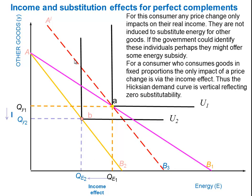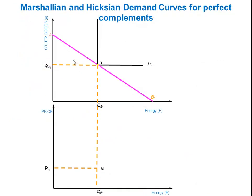Since the only impact is via the income effect, the Hicksian demand curve is vertical, reflecting zero substitutability. Let's look at how we would derive that. In the top diagram, we have the same situation as before: initial equilibrium at A, where Priyanka is maximizing her satisfaction on U1, given her income and relative prices of other goods and energy. She's at A, consuming QE1 energy at price P1. We're going to derive a demand curve for energy — in our particular case, let's say the price of energy goes up to P2.